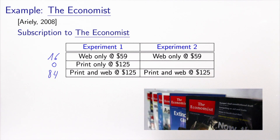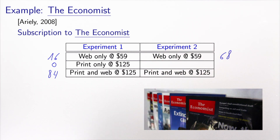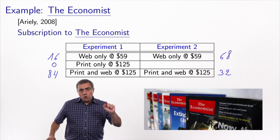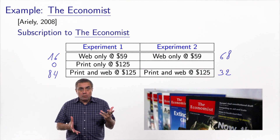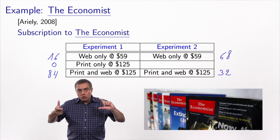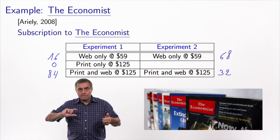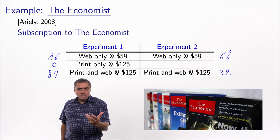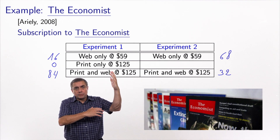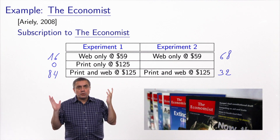In the second experiment, the dominated alternative was removed, leaving only web-only and print-and-web. In this case, 68 people chose web-only and 32 chose print-and-web. This is interesting because the presence or absence of an irrelevant dominated alternative completely changed the choice probabilities for the other two options. From utility theory, this alternative should play no role — people should evaluate the remaining two alternatives and select the one with highest utility.